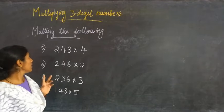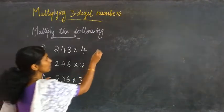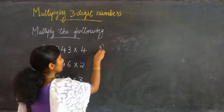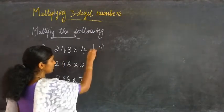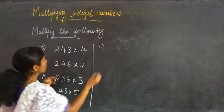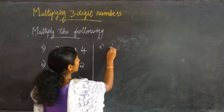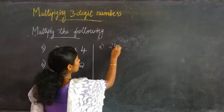For the 5th question: 243 into 4. Multiplying the ones first: 3 into 4 equal to 12. Writing 2 here and 1 is carried over. Then 4 into 4 equal to 16, plus 1 is 17. Writing 7 here and 1 is carried over. Then 2 into 4 equal to 8, plus 1 is 9. So 243 into 4 equals 972.